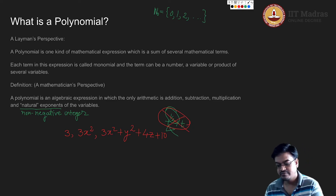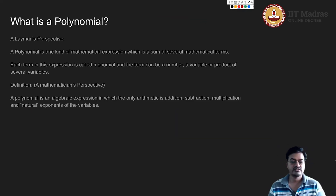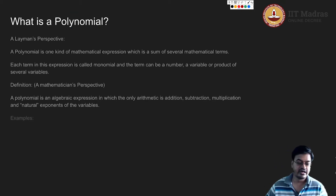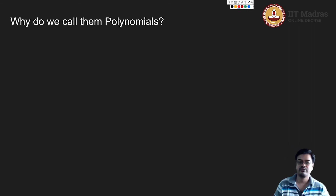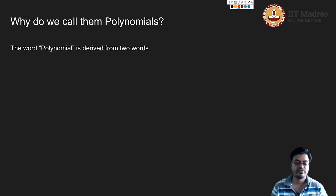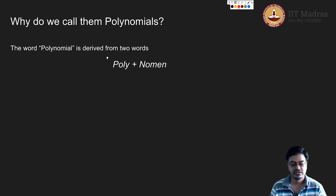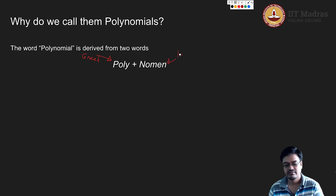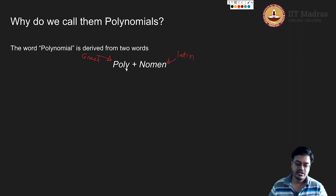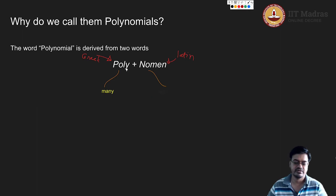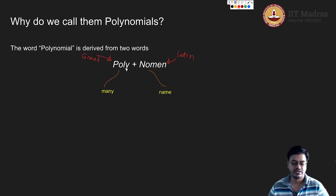Now we know what a polynomial is. It is time to see why the name polynomial — why do we call it that? Polynomials is derived from two words. One word is poly, and the second word is nomen. Poly has roots in Latin and this word is Greek. The word poly essentially means many and the word nomen essentially means names or terms. So in our case, an expression having many terms is called a polynomial.